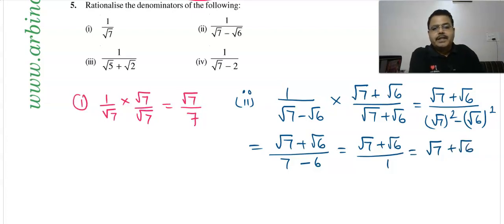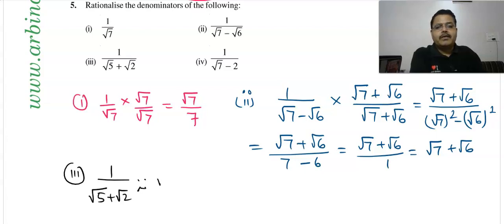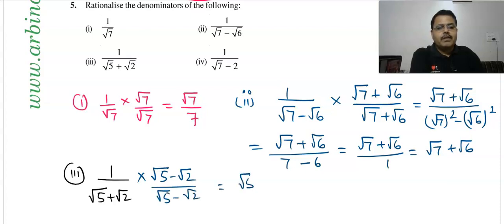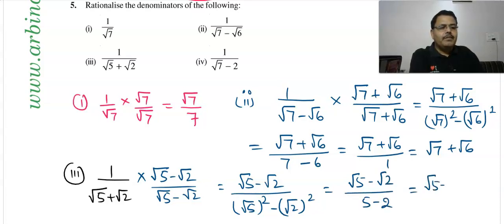Third question: 1/(√5 + √2). Multiply top and bottom by its conjugate (√5 − √2). The numerator becomes √5 − √2. The denominator uses (a+b)(a−b) = a² − b², giving √5² − √2² = 5 − 2 = 3. So the answer is (√5 − √2)/3.